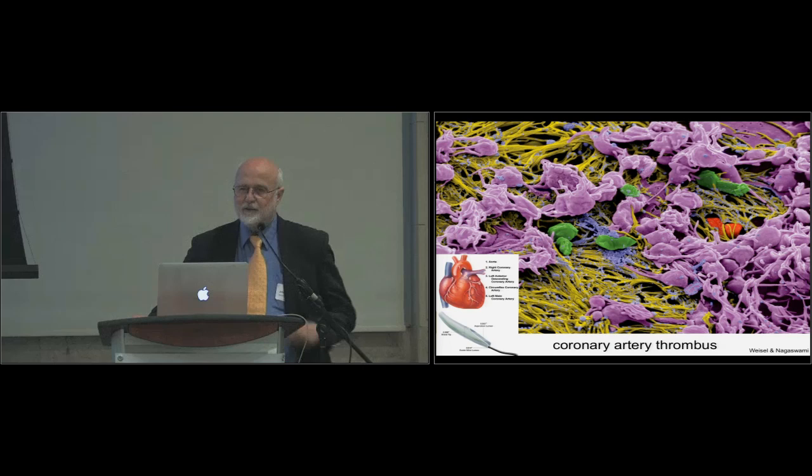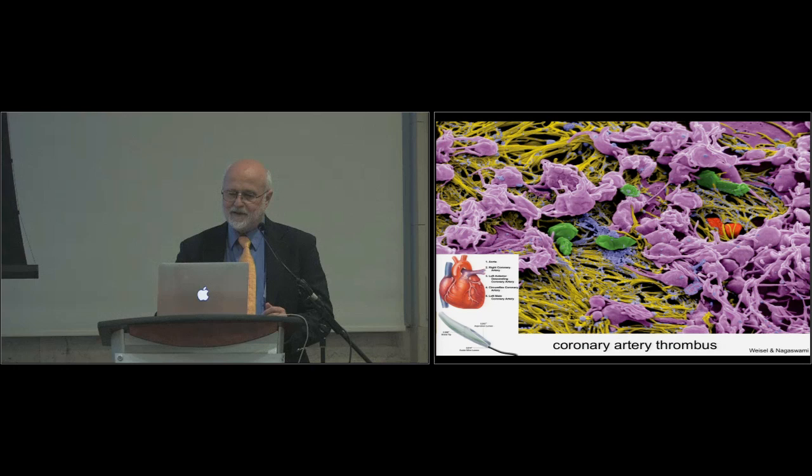This is one example, and you can see I've colorized it to make the various components easier to see. You see platelets in purple, microparticles in blue, fibrin fibers in yellow, and there are some small cholesterol crystals that came from the ruptured plaque in green, and a few red blood cells peeking through as well.